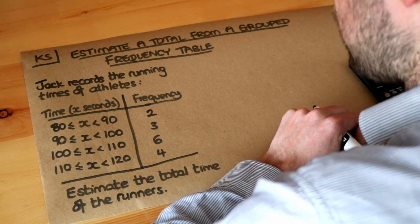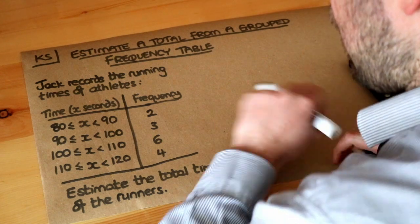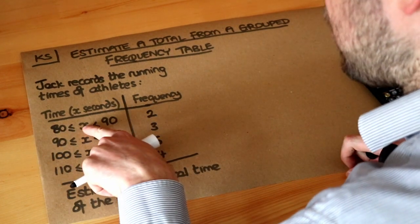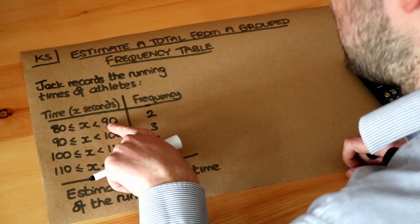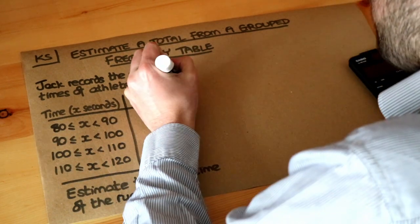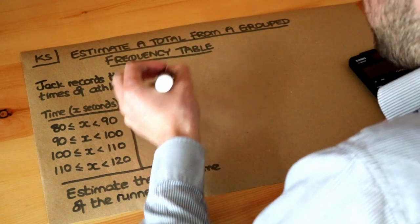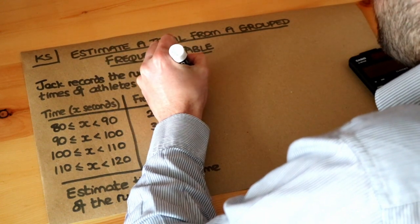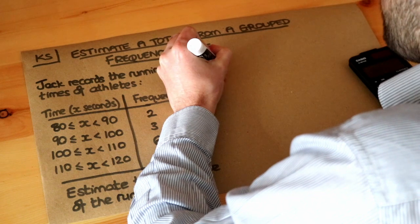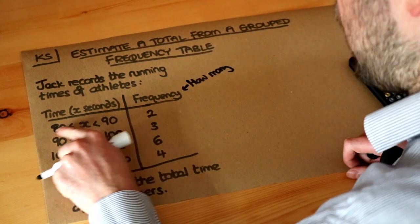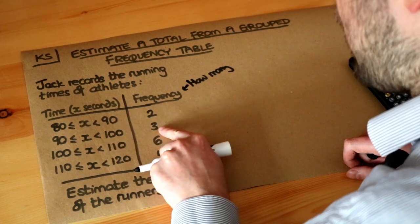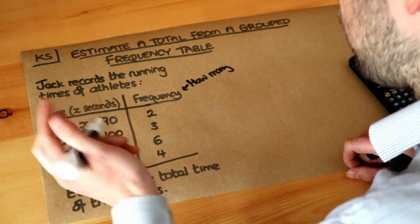Jack records the running times of athletes in different ranges. So that just means a time in x seconds between 80 and 90 seconds. Remember, frequency just means how common something occurs, so how many athletes had that time. We've got two athletes with a time between 80 and 90 seconds, three athletes with a time between 90 and 100, etc.